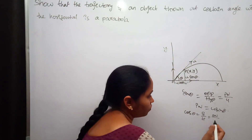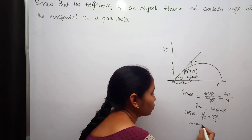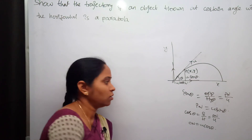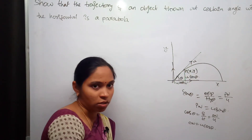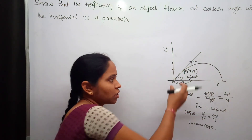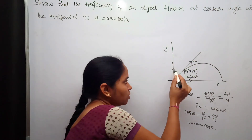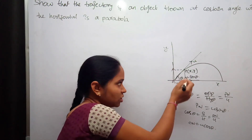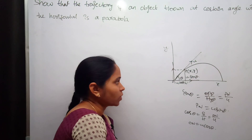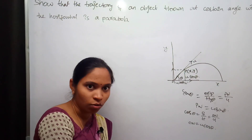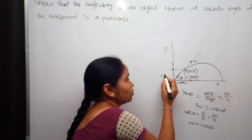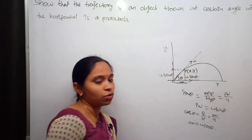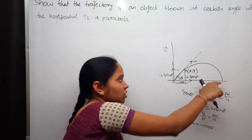So here we have u sinθ along the vertical and u cosθ along the horizontal. As this is a rectangular coordinate system, opposite sides are equal in magnitude and also have the same direction. Therefore the velocity vector is resolved into two components: one along the horizontal direction and the other along the vertical direction.